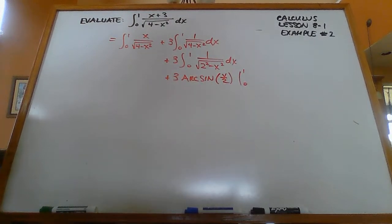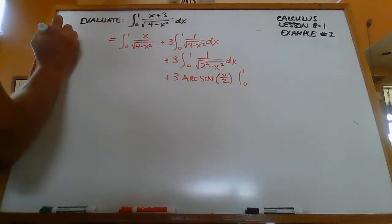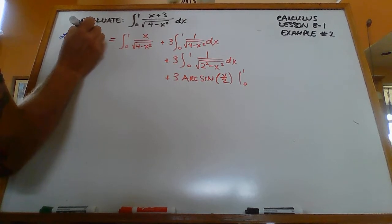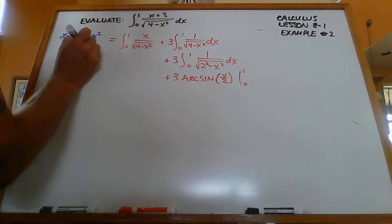Now this part, the first part over here, we can just use u substitution on this. We can let u equal 4 minus x squared, then du is negative 2x dx.